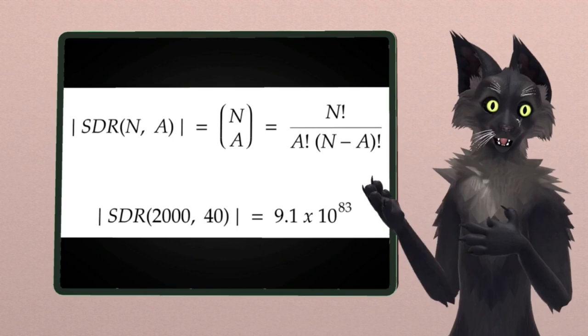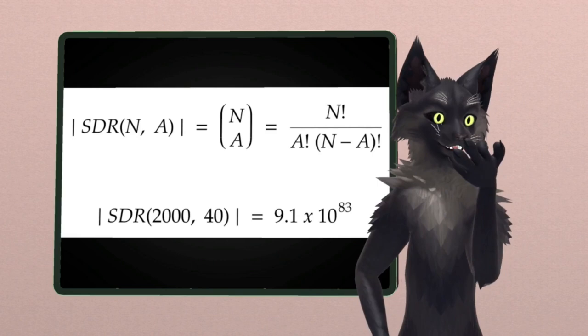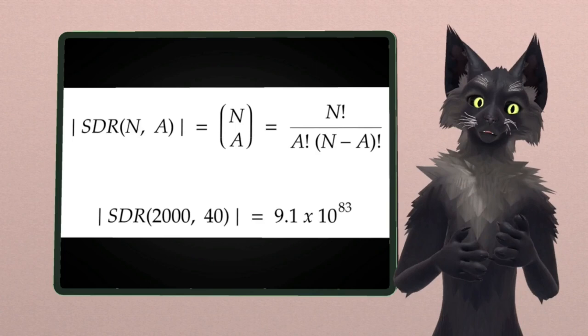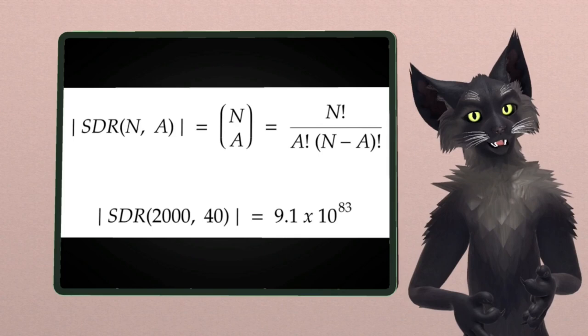For context, there are also about this many atoms in the visible universe. This is actually about a hundred times larger than the size of the visible universe, but I mean, who's counting? When you get to things this large, who's really counting?